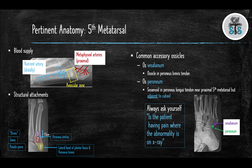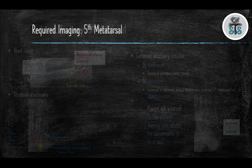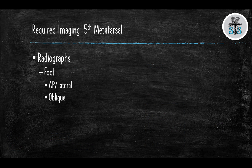Always ask yourself: is the patient having pain where the abnormality is? If they are not, this could be a normal variation. You need to order three views of the foot — an AP, a lateral, and an oblique. You can also order a CT scan or an MRI; an MRI will be most helpful for ruling out an occult fracture.